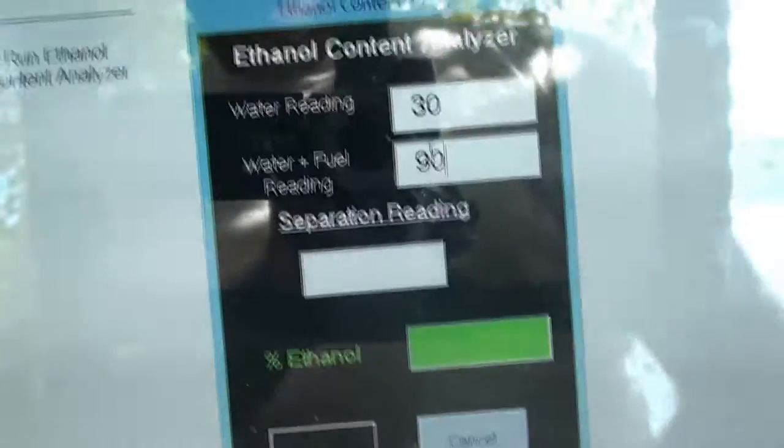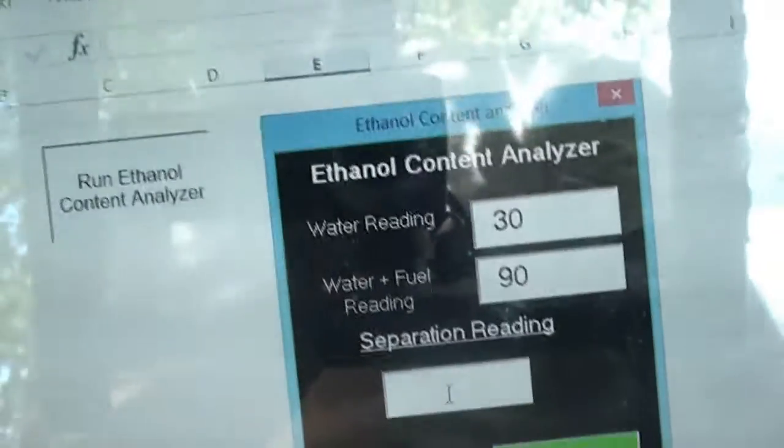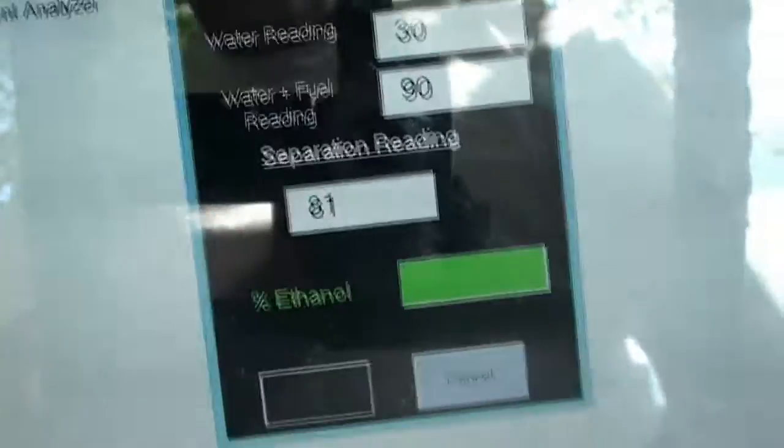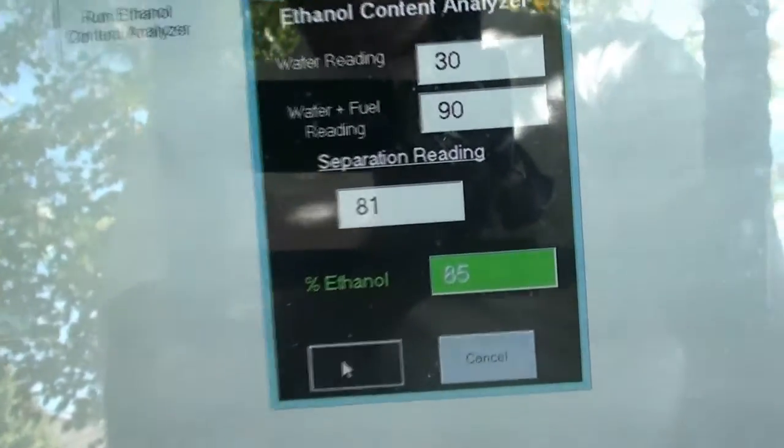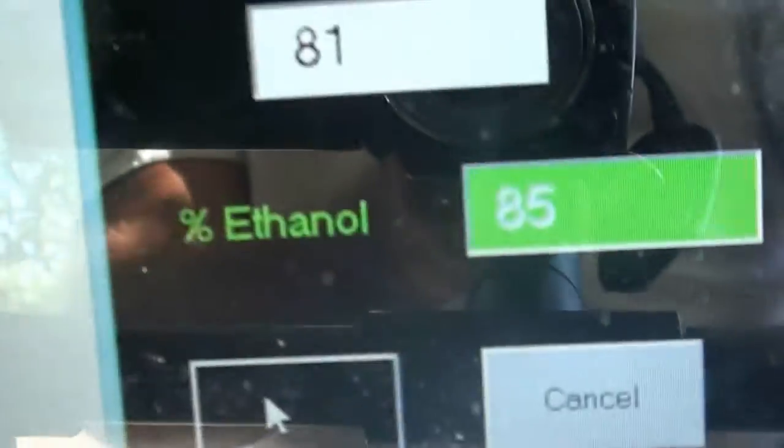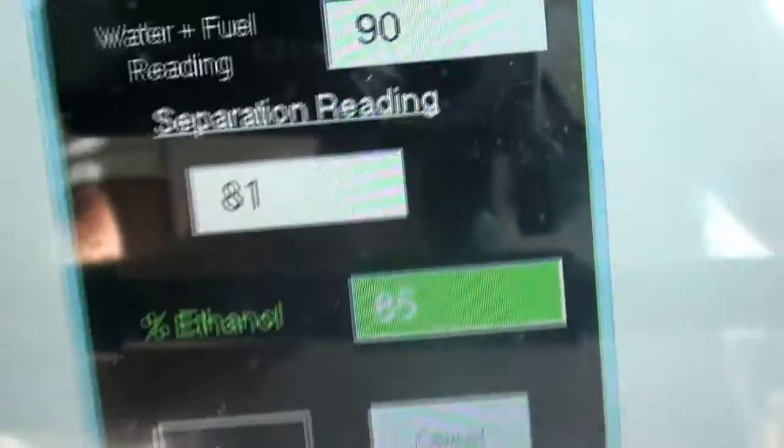So you want to take your separation reading, we use 81, and then click the little box down here, which is all black and you can't read it, but you click that, and it says my E85 is 85% ethanol.